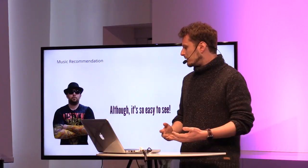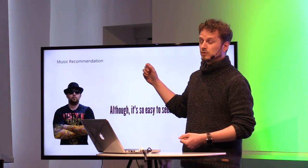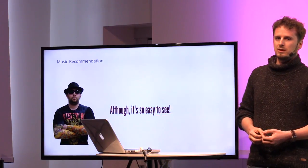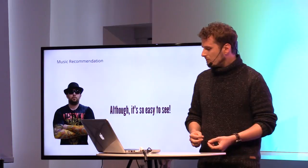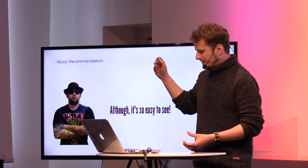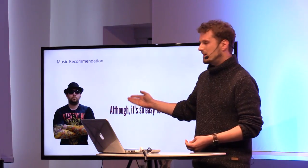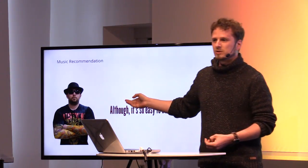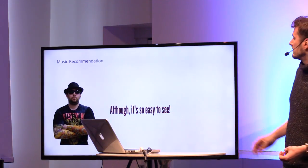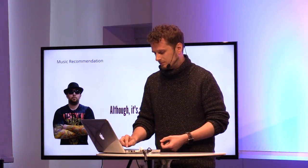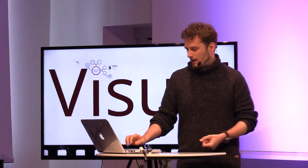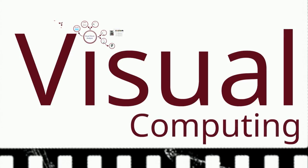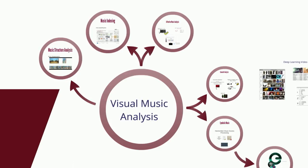But the problem is, if you don't know a person, if you don't know a user profile in advance, that's always the problem to start off. And what I'm arguing is, in my interpretation, it's so easy to see which kind of music a person likes. We just have to find ways to extract that information and turn it into music recommendations. That's what I call visual music computing — the visual analysis of music references in daily life.